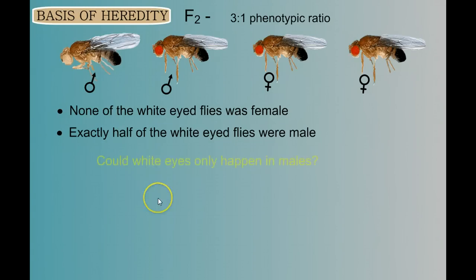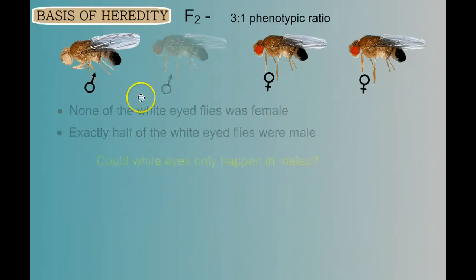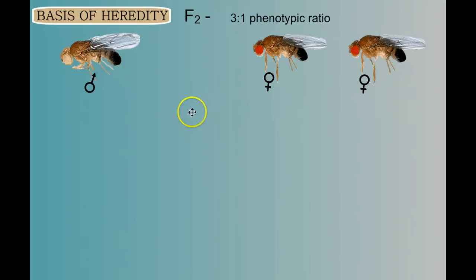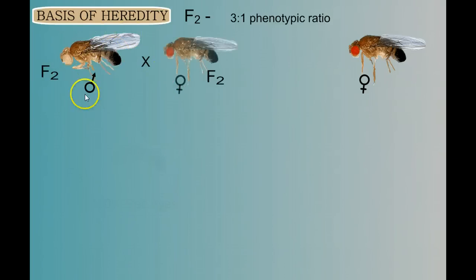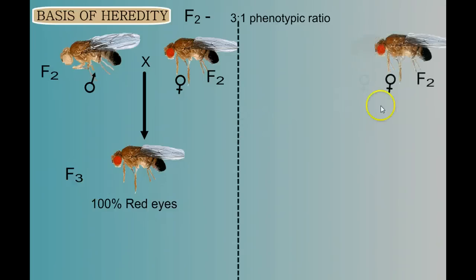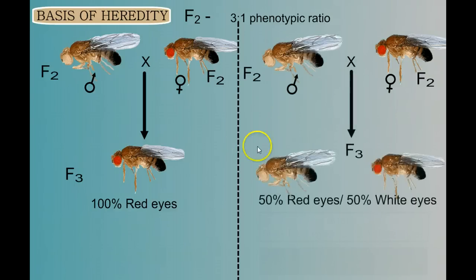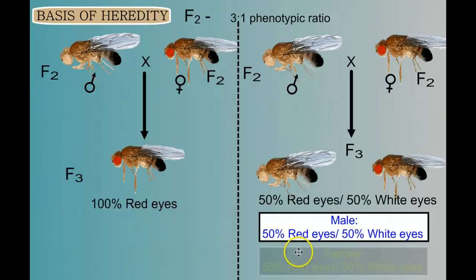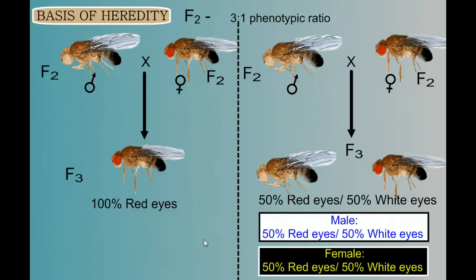So the question is: could white eyes only happen in males? We have to do another round of crosses to find out, so let's make an F3. We'll take this white-eyed male and cross it with the red-eyed females from the F2 generation. Sometimes when we do this we get 100% red eyes, and we can't figure out too much from that. But interestingly, when we take the white-eyed male and cross it with another F2 female, sometimes the offspring were 50-50 red eyes to white eyes, with half the males white and half the females white too. So white eyes could show up in female fruit flies.